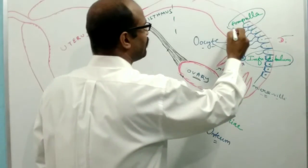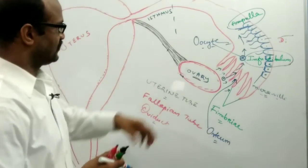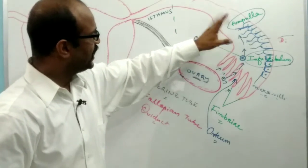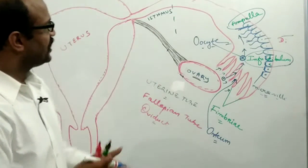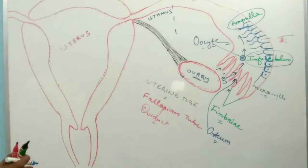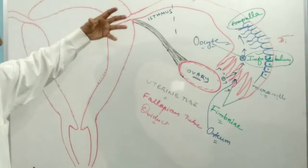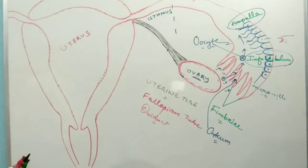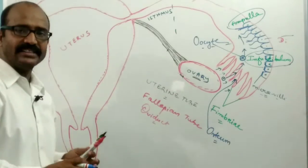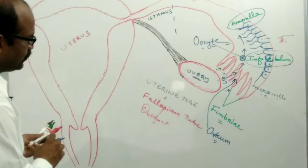The secondary oocyte, by the specific movement of the fallopian tube, enters into the fallopian tube. At the region of the ampulla, fertilization takes place. The fallopian tube is positioned by short mesenteries known as the mesosalpinx.